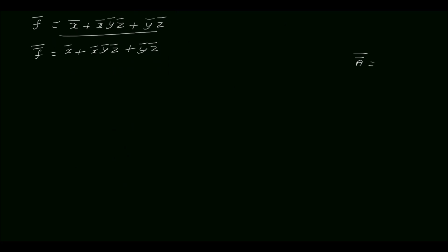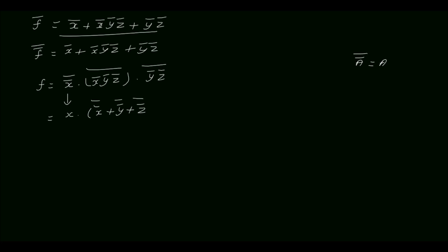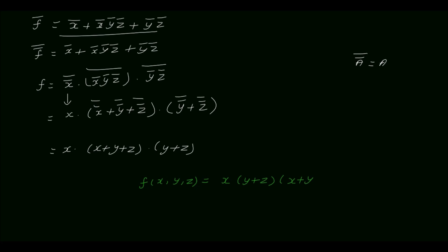Since a complement complement equal to a, f complement complement equal to f. Applying De Morgan's theorem: f equal to (x complement) complement dot (x complement plus y complement plus z complement) complement dot (y complement plus z complement) complement, which equals x dot (x plus y plus z) dot (y plus z). The final POS expression is f(x, y, z) equal to x into (y plus z) into (x plus y plus z).